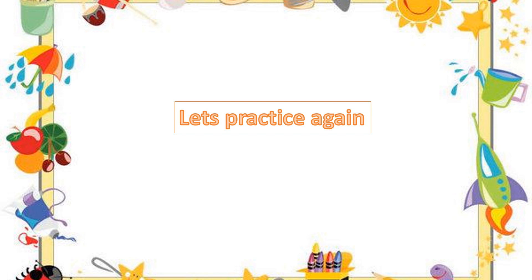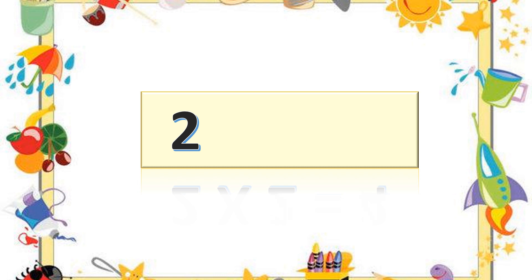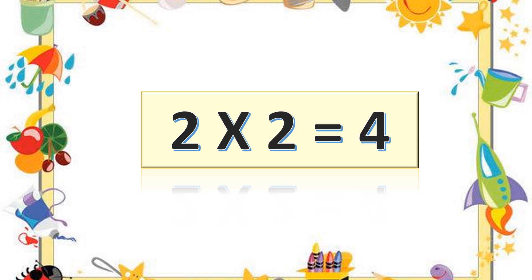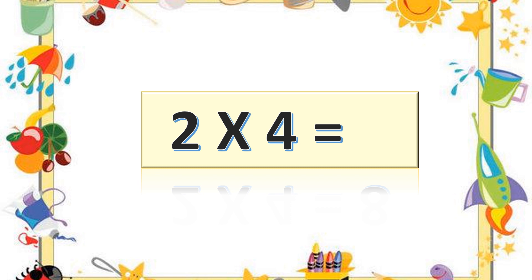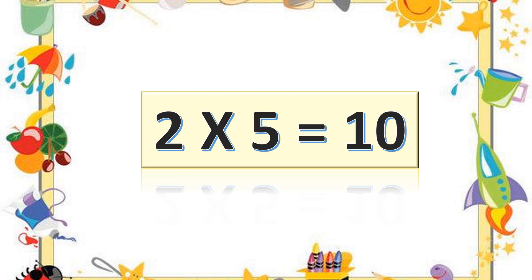Let's practice again. Two ones are two. Two ones are two. Two twos are four. Two twos are four. Two threes are six. Two threes are six. Two fours are eight. Two fours are eight. Two fives are ten. Two fives are ten. Two sixes are twelve. Two sixes are twelve.